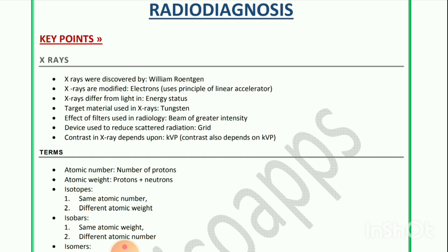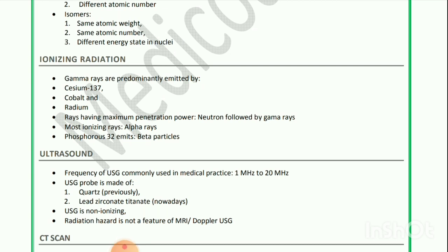Key terms: Atomic number refers to the number of protons. Atomic weight is protons plus neutrons. Isotopes have the same atomic number but different atomic weight. Isobars have the same atomic weight but different atomic number. Isomers have the same atomic weight and same atomic number but differ in energy state in the nuclei.